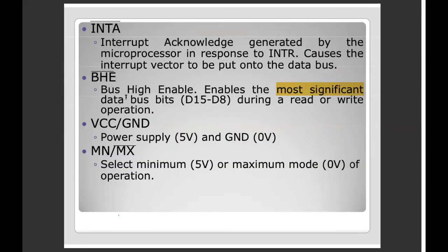We know that data has two parts. The accumulator register, base register, and count register all have two parts — high and low. We work on the high parts of the data and also the low parts. The most significant part is the high byte of data.